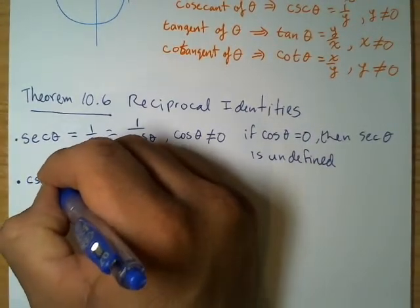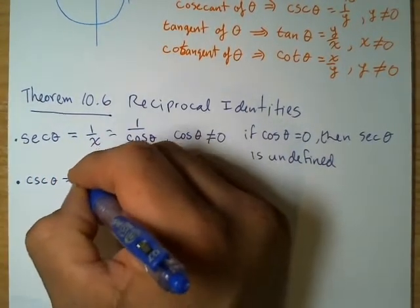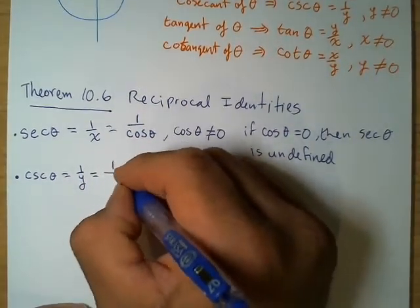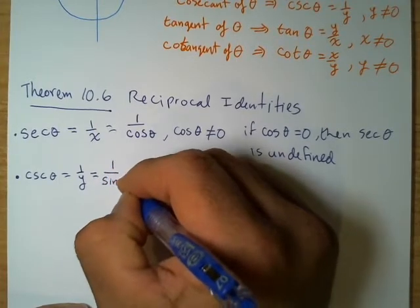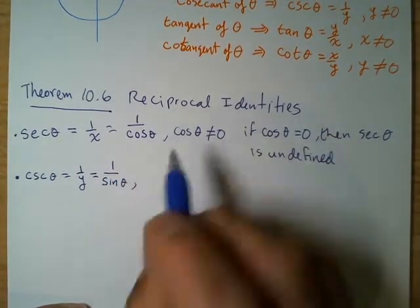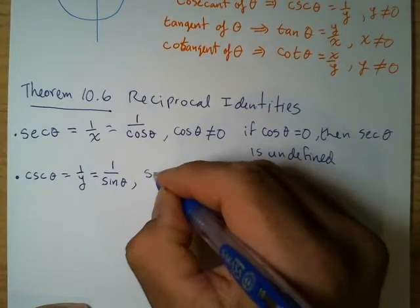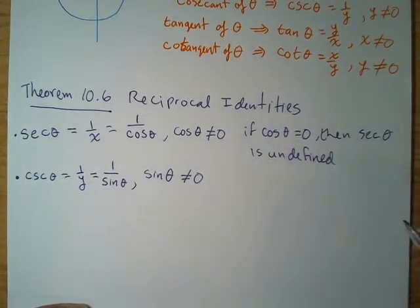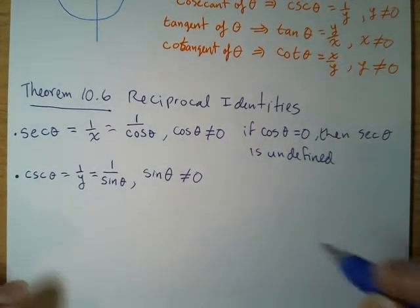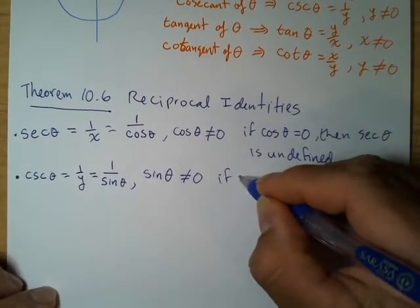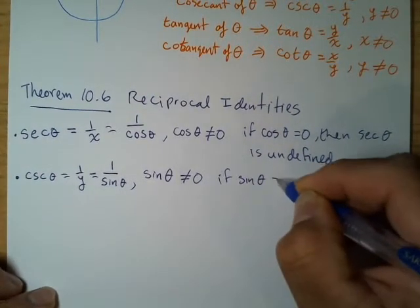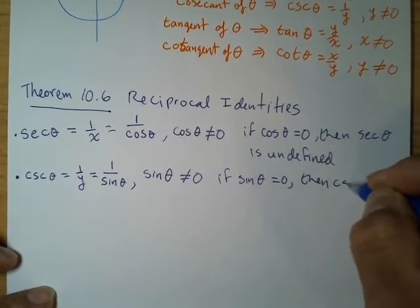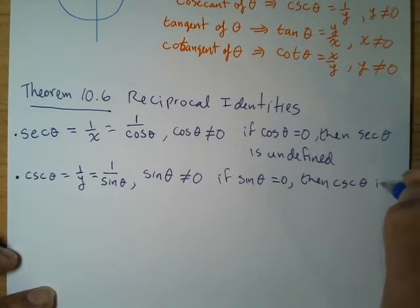The cosecant of theta: we said it was 1 over y, and using substitution this is 1 over sine of theta, as long as sine of theta does not equal zero. If sine of theta is equal to zero, then the cosecant of theta is undefined.